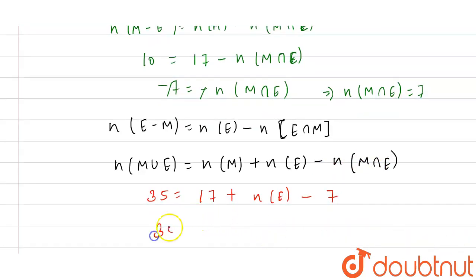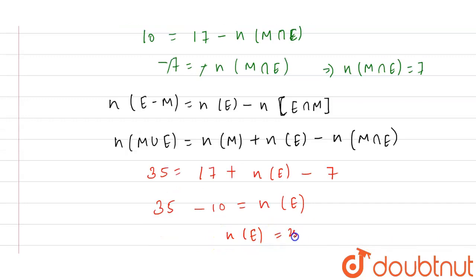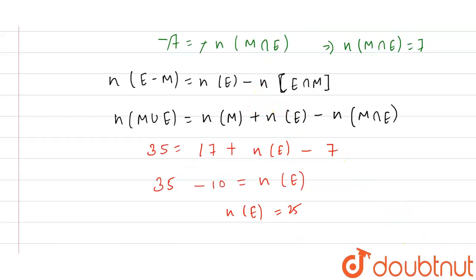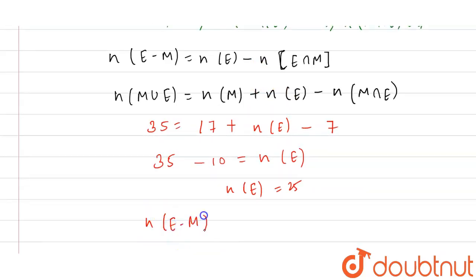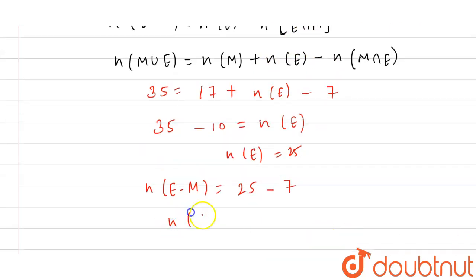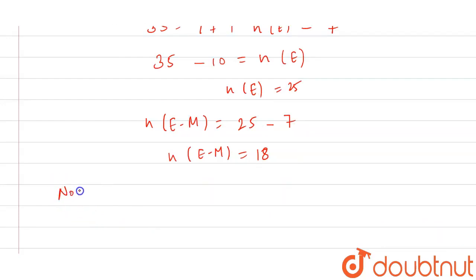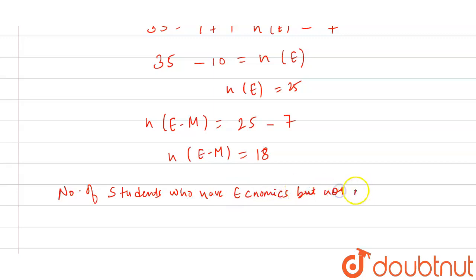From here: 35 − 10 = n(E), so n(E) = 25. Now putting this value into the formula: n(E − M) = n(E) − n(M ∩ E) = 25 − 7 = 18. Therefore, the number of students who have taken economics but not mathematics is 18. This is our final answer.